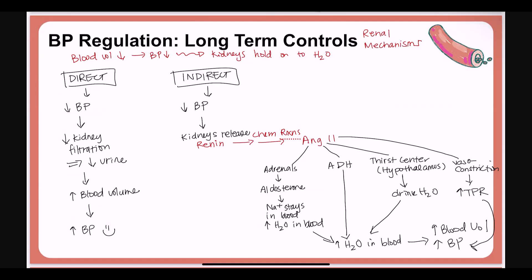This indirect mechanism has a special name — it's named after three portions of these steps: the renin-angiotensin-aldosterone system, or RAAS. All of those things — aldosterone action, ADH, drinking water due to thirst — lead to increasing blood volume and therefore increasing blood pressure. And vasoconstriction increases TPR, which also increases blood pressure.